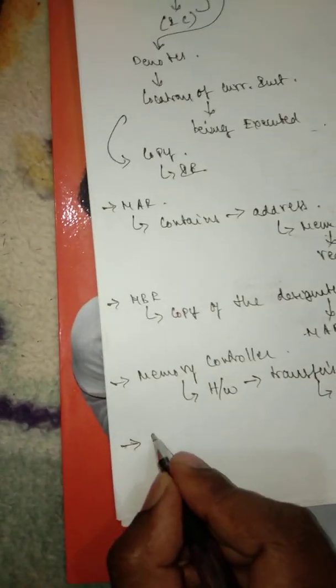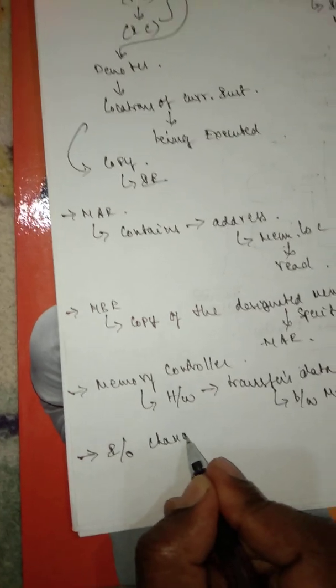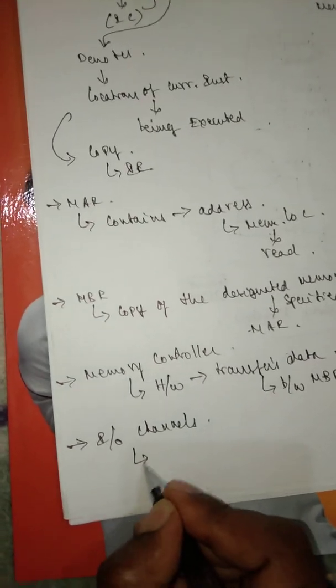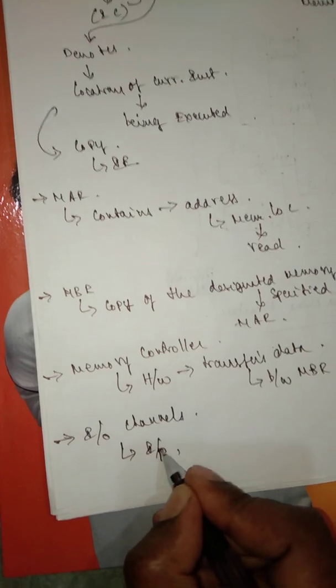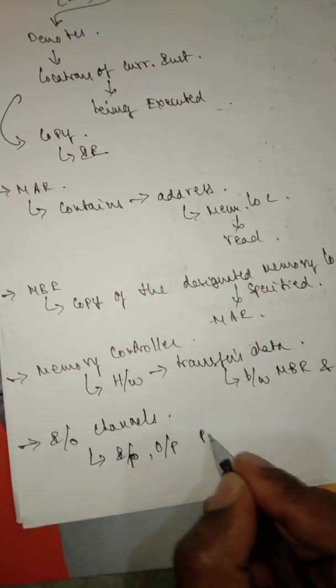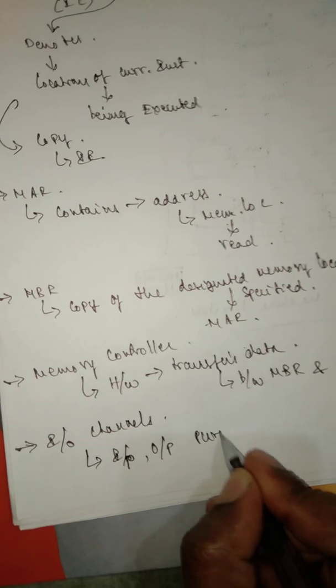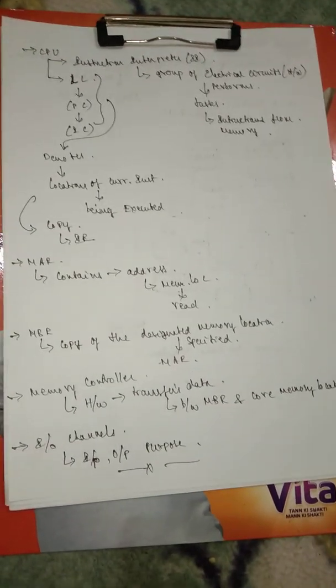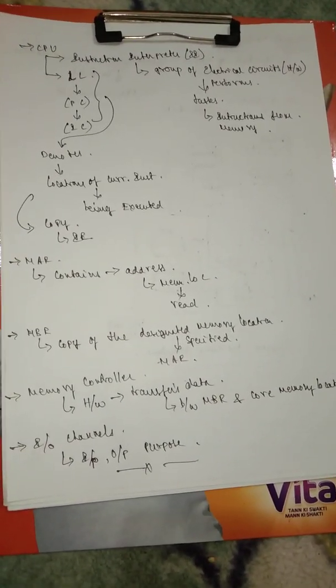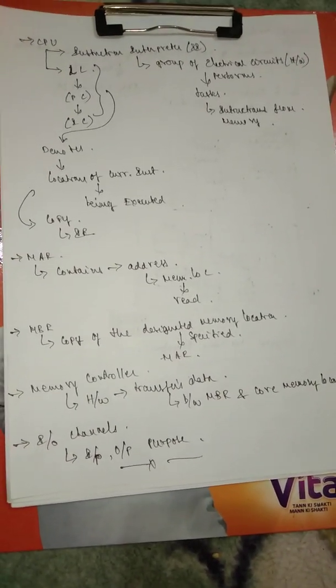The last one is the input/output channels, which are used for input as well as output purposes. So these are the things that you have to discuss if anything is asked based on von Neumann architecture. Thank you.